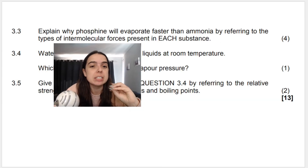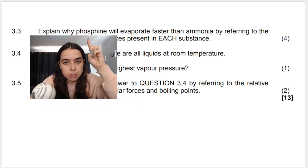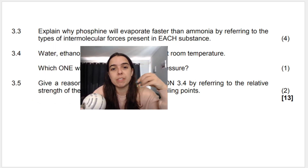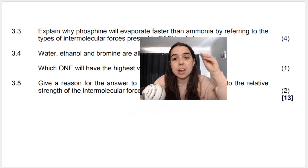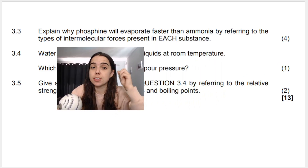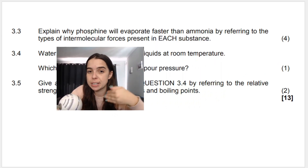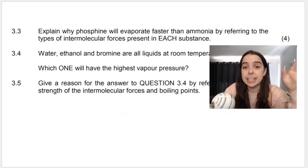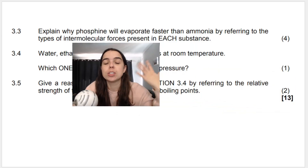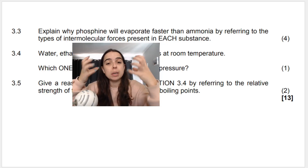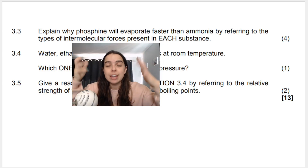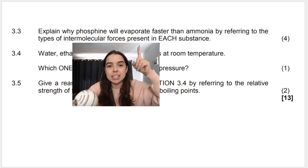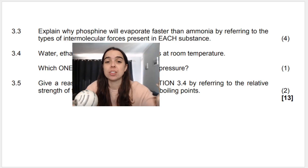Question 3.3, worth four marks: explain why phosphine will evaporate faster than ammonia, referring to the type of intermolecular force present in each substance. Again, they want you to speak about intermolecular forces, but beyond that we're going to compare strength, compare energy, and that will explain why one evaporates faster than the other.